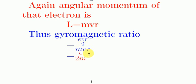If we simplify this expression, we can easily write e by 2m, where e is the charge of the electron and m is the mass of the electron. It is a constant term because the charge of the electron is 1.6 times 10 to the power minus 19 coulomb and m is 9.1 times 10 to the power minus 31 kg.